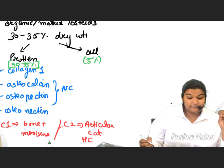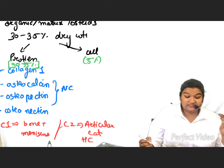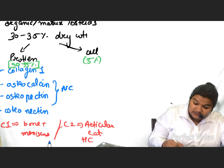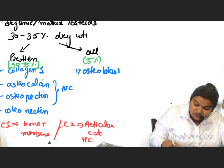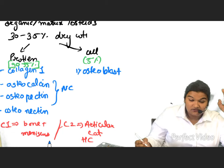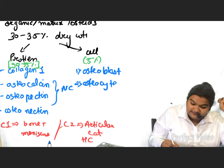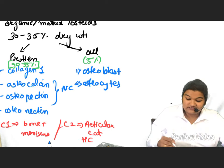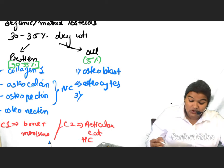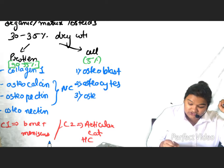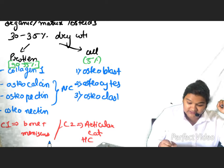There are three types of cells present in the matrix. The first one is osteoblast, the second is osteocytes, and the third type of cell present in bone is osteoclast.